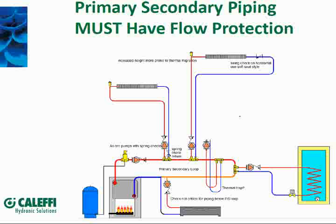One situation that can really bite you is an indirect tank off a primary loop. If that tank heats up to 140°F and the boiler shuts off but a pump is running for a call, heat can migrate out of the indirect tank back into the primary loop and up into other circuits. You really want 100% shutoff protection on indirect tanks. Some guys put a zone valve so the call for heat triggers the zone valve and the end switch turns on the pump — giving you both the check valve in the pump and the zone valve as protection.